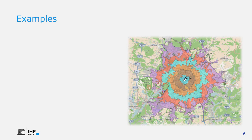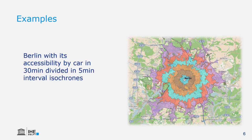Here we see another example of what we can do with GIS. This is a so-called isochrone map, where we see the travel time from the center of Berlin to the outskirts. The total travel time is 30 minutes, divided in circles of 5-minute intervals. In this way we can see which areas can be reached very fast and which take longer, depending on road conditions.